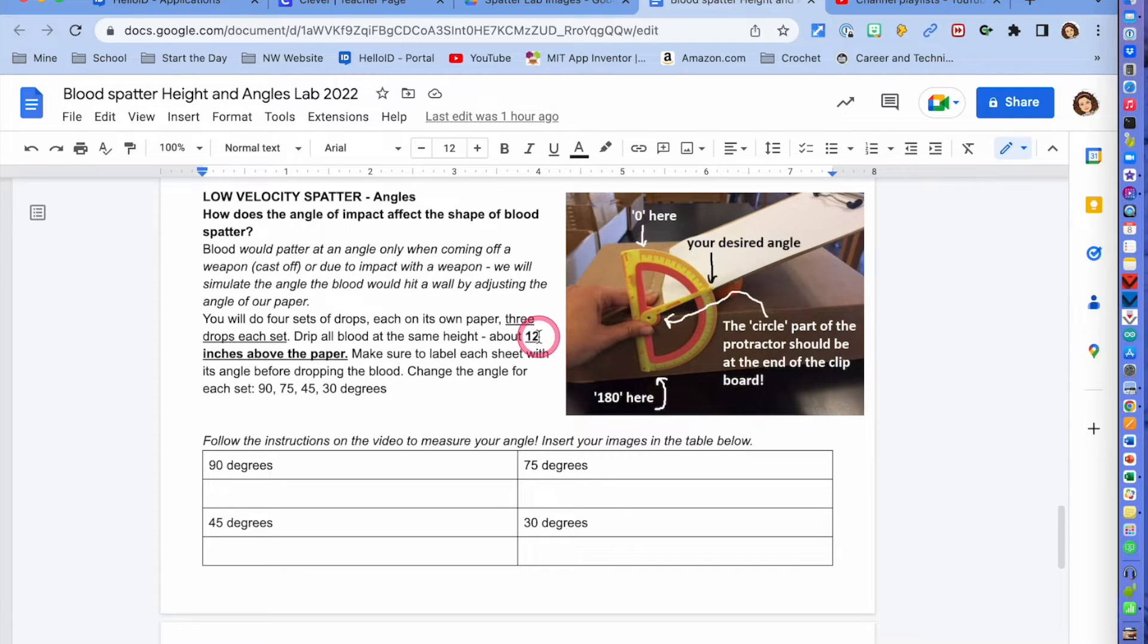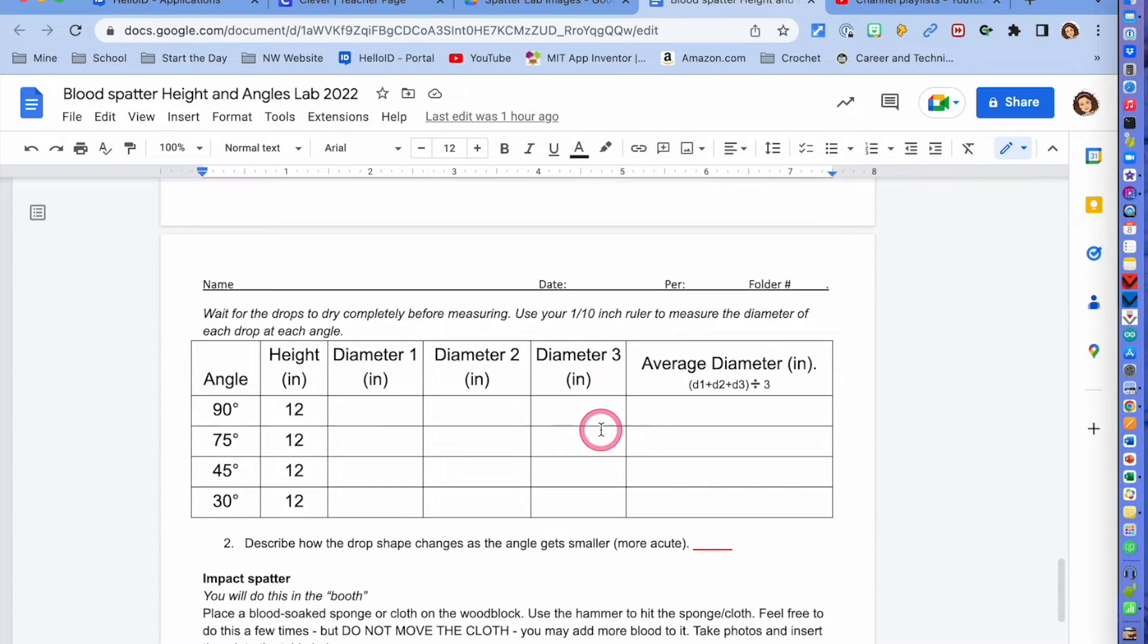And that's important, the 12 inches, so that it's about the same every time. And yes you might have to have a partner who's holding the clipboard or doing the measuring. Now you're going to put in those diameters once they dry then you're going to measure those and you're going to put them in and then you're going to figure out your averages as well.